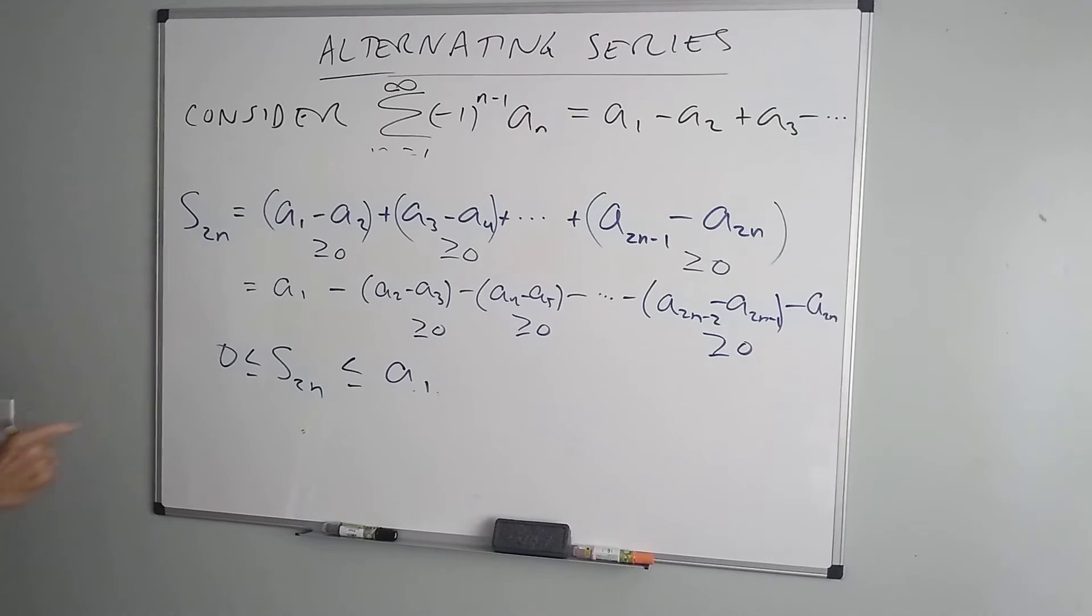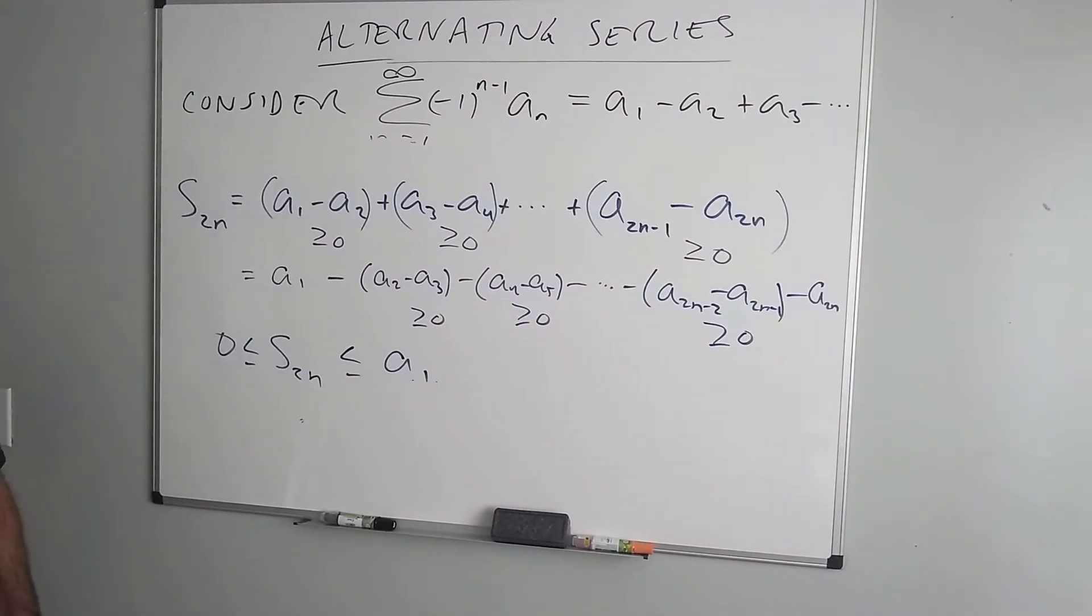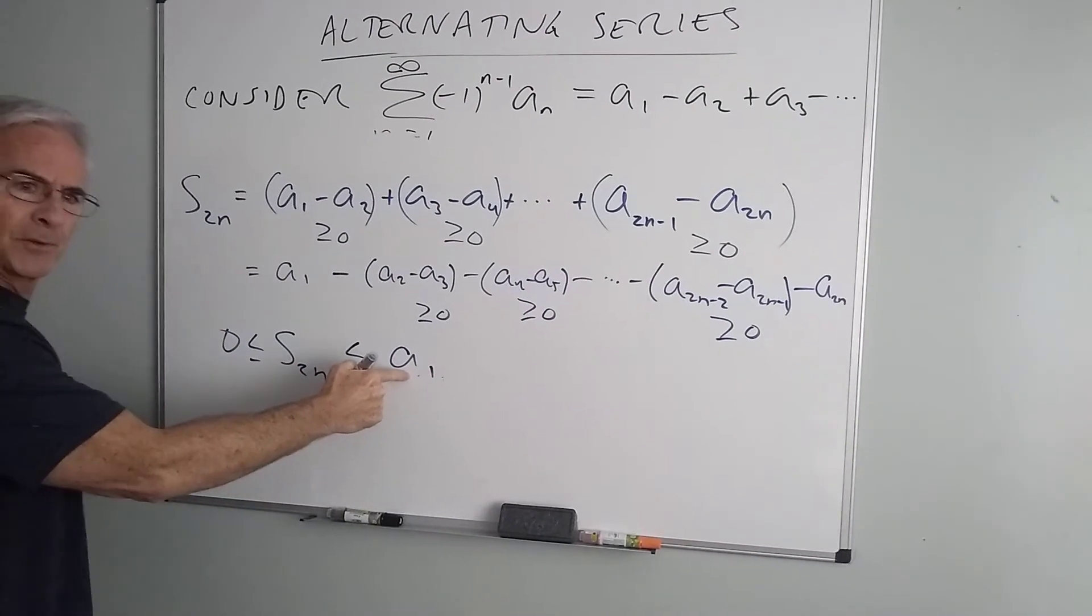Now the interesting thing about this is it doesn't matter how many terms I go out. If I add up the first two terms or the first two million terms, that sum will always be smaller than the very first term of the series.